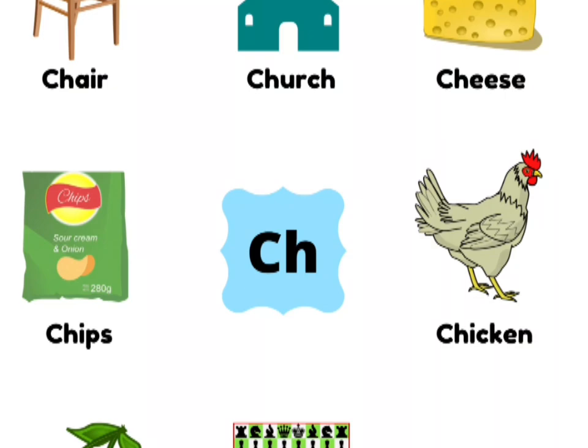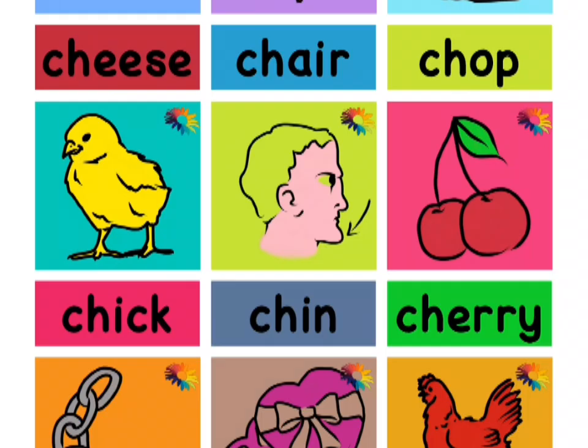And here are a few more pictures of the CH sound: cheese, chair, chop, chick, chin, and cherry. So when we read CH — when C and H come together — we are going to say CH.